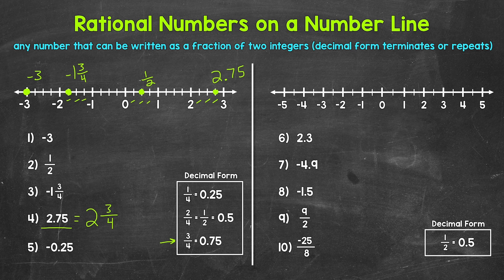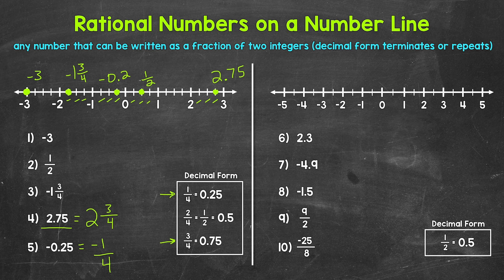Moving on to number five, we have negative twenty-five hundredths, which equals negative one fourth in fractional form. Negative one fourth is going to be to the left of zero and in between zero and negative one. We have negative one fourth, then negative two fourths (negative one half), and then negative three fourths. So negative one fourth, or negative twenty-five hundredths, is right here. I'll write this in decimal form.